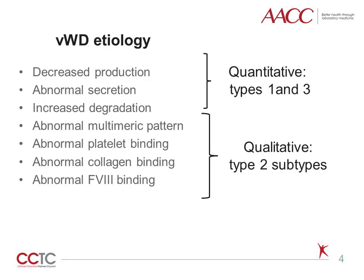Von Willebrand disease is genetically and phenotypically heterogeneous. Type I von Willebrand disease is characterized by deficiency of von Willebrand factor due to decreased von Willebrand factor production, abnormal secretion, or increased degradation, and symptoms can vary from mild to severe, depending on the degree of deficiency. The protein that is present functions normally.